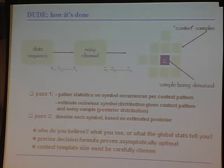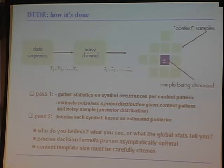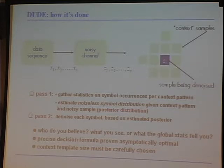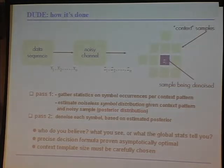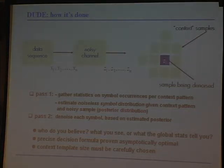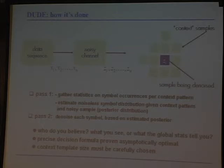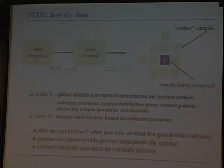The intuition is: who do you believe — what you see, or what the global statistics tell you? If the context is all white and the pixel you see is black, maybe that black is noise and should also be white. But at some point you also have to believe what you're seeing — it depends on how much noise you have. The algorithm solves optimally how to trade off these two types of information. And crucially, it's important to model the data, including finding the right size of the context template — how much context do you look at.